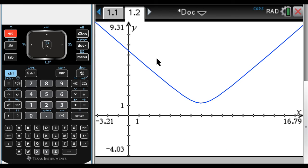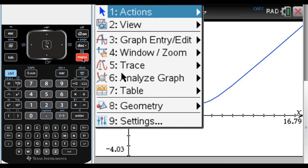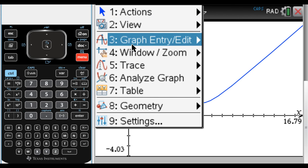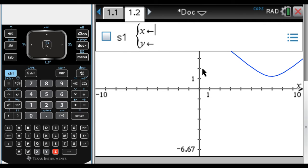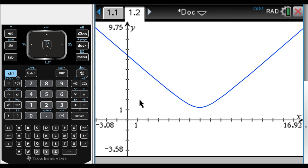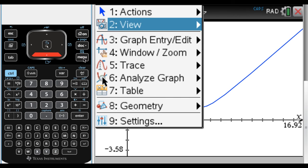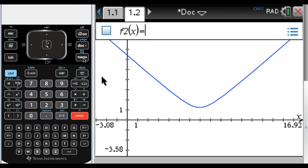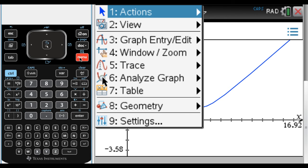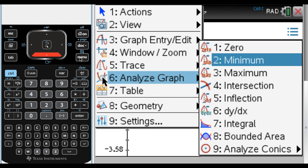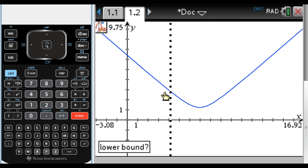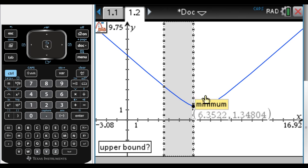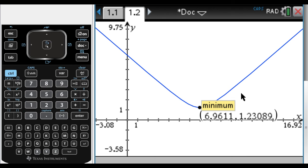So if that doesn't work, if the minimum doesn't show up, what you do is menu, and then six is analyze, then minimum. And then you got to click to the left of the minimum, and then drag, and then click somewhere to the right, and it'll paste it for you. So there's our minimum. So there is one other way that I want to show you that you can enter this distance formula, but this is it. This is how you can find the minimum distance. So I'm going to go back here, so press control, and to the left will take you back there.